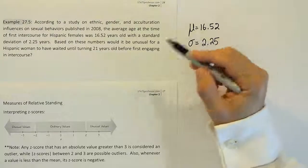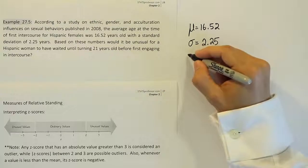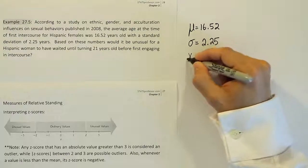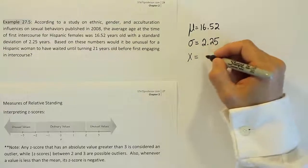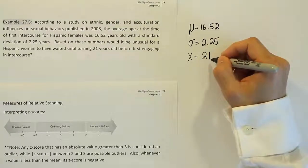With a standard deviation of 2.25. Then from there, there's one other number. They say that if a woman waited until 21 years old, which should be unusual, that's going to be the person's x value for the problem because that's the number we're interested in figuring out if it's unusual or not.